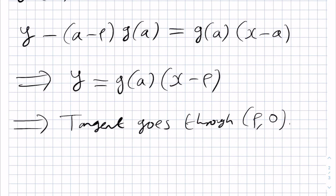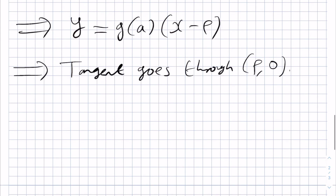Writing the tangent line in this form means we can easily see that this tangent line goes through the point p, 0. This is because when x equals p, we have p minus p, which is 0 on the right-hand side, and consequently y is equal to 0. So the tangent line goes through this point.